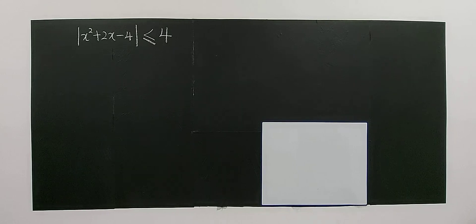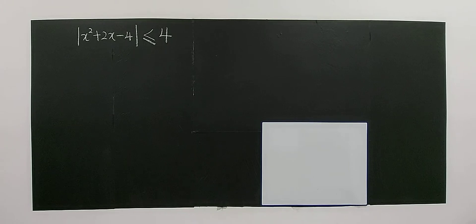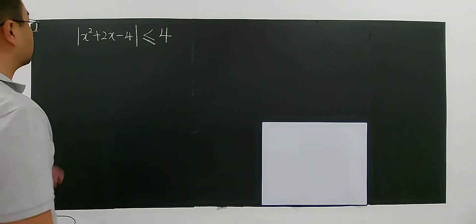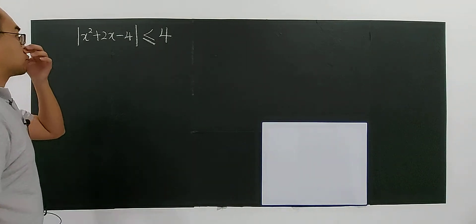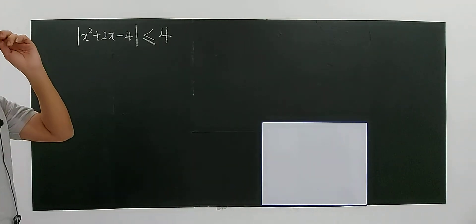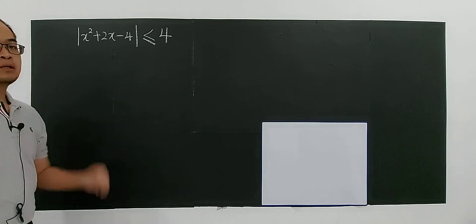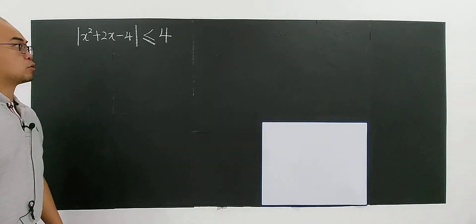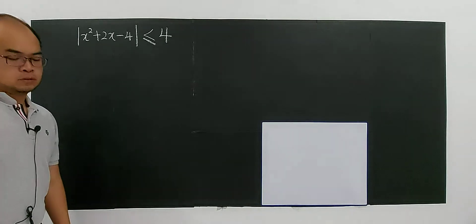Alright, let's look at this example under the subtopic of absolute inequalities. We have modulus of x squared plus 2x minus 4, less than or equal to 4.